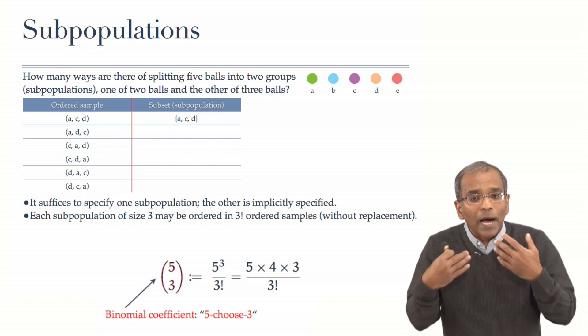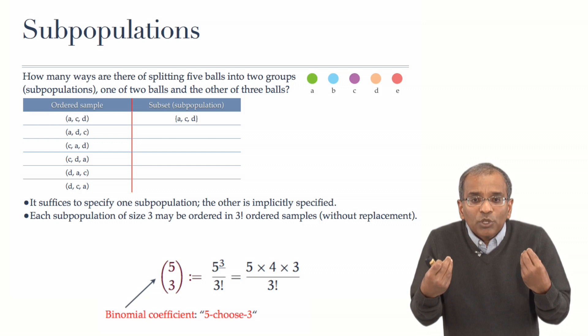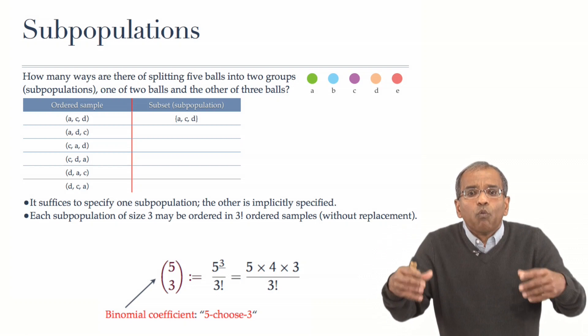That entire object on the left is called the binomial coefficient. Again, we say it in words, five choose three. And the terminology exposes the mechanism of what it is we are doing.